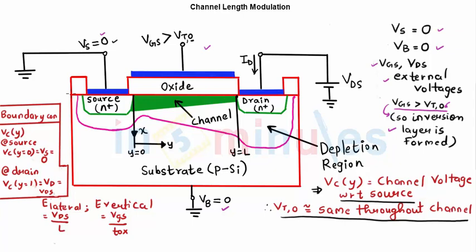Before we proceed, we need to consider certain parameters: finding the channel voltage, from which we'll find the charge on the channel, and see how ID flows during saturation and what happens due to channel length modulation. A new term is introduced: VC — the voltage of the channel with respect to coordinate Y, where Y=0 is at source and Y=L is at drain. VC(Y) represents the channel voltage.